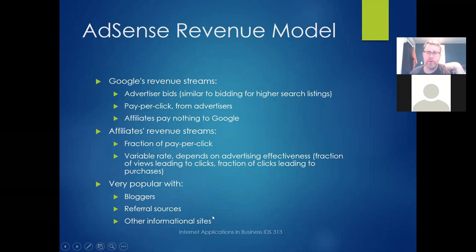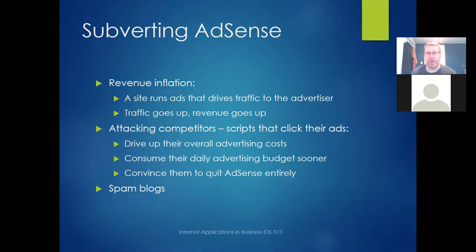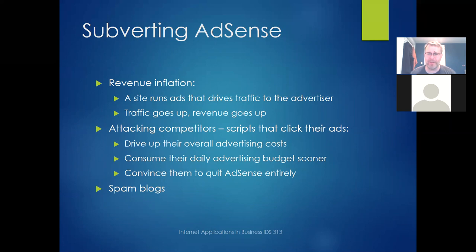AdSense is very popular with bloggers, referral sources, and other informational sites — any site that wants to make money but isn't selling a product, same as TV shows on network TV. Now, there are ways to subvert this model. One is called revenue inflation: the site owner clicks on the ads on their own site to generate extra money — for example, an unemployed blogger clicking their own ads to make $10 a day. This is why Google is more cautious about AdSense revenue than on its own site or close partner sites — it basically says, 'You're some blogger, I don't know you, maybe you're legitimate, maybe you're not, but we're going to keep a closer eye on you.'